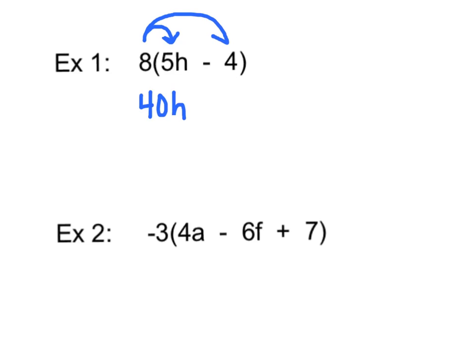And I'm going to draw a second arrow because there are two terms in the parentheses. That helps me to remember that I need to multiply the 8 by the 4 as well. Since there's a minus after 5H, I'm going to write a minus after 40H, and 8 times 4 is 32. We're done with example 1.